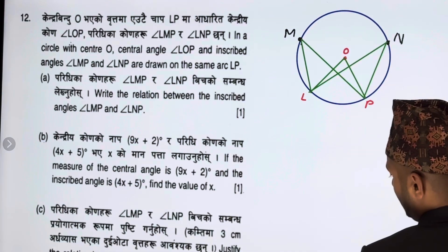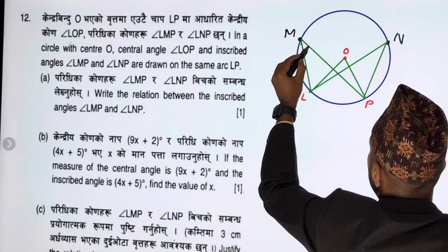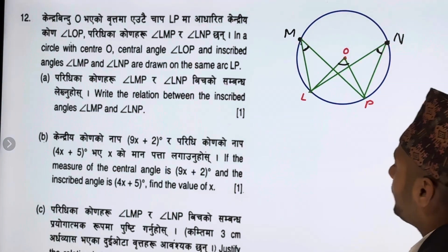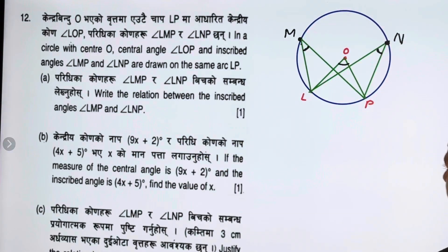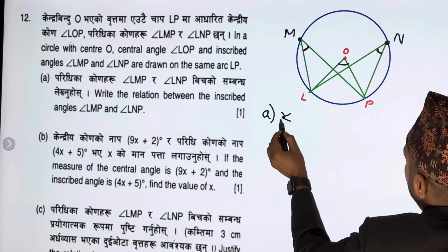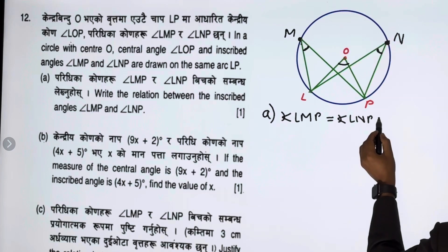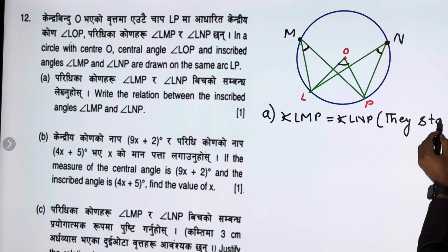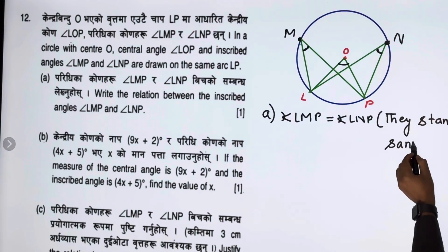This is the central angle LOP. Now the question is: write the relationship between inscribed angle LMP and inscribed angle LNP. Angle LMP equals angle LNP — they stand on the same arc.